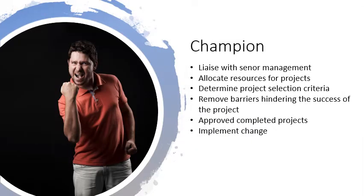Next, let's meet our Champion. The ideal candidate is typically upper-level managers. They have knowledge of Six Sigma concepts, strategies, tools, and methods, and operational definitions. They have an emphasis on management tools, and they're usually a certified ASQ Yellow Belt. Their responsibility is to be a liaison with senior management, allocate resources for projects, determine the project selection criteria, help remove barriers hindering the success of the project, approve completed projects, and help implement change.